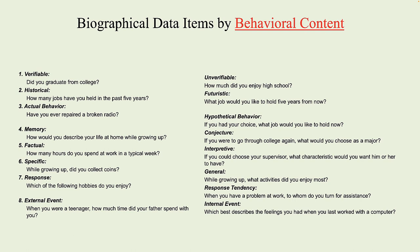Let's look at item eight. I suspect that item eight might have some adverse impact. Some ethnic minorities tend to come from broken homes more often than do other persons. Depending upon the job for which we were seeking applicants, I favor the internal event type of question more than this specific external event question. But not all external event questions are so poorly written. Perhaps we could ask, 'when you were a teenager, did you have a lot of friends?' — but what would that tap into?